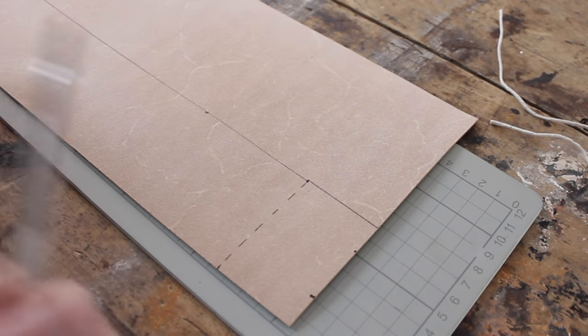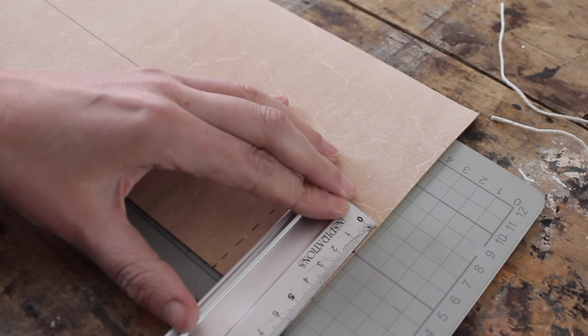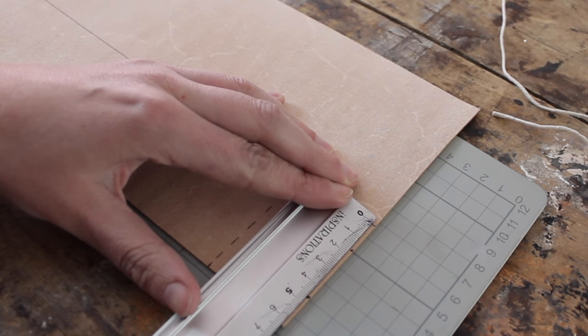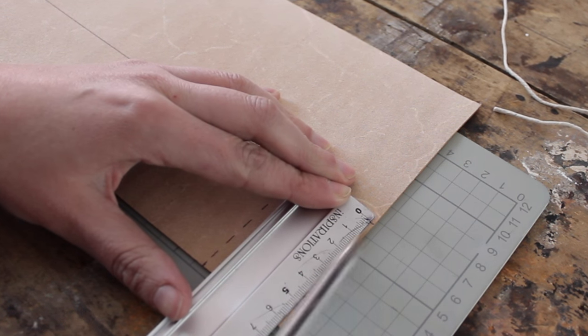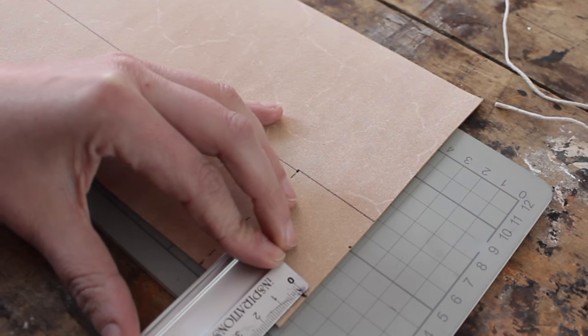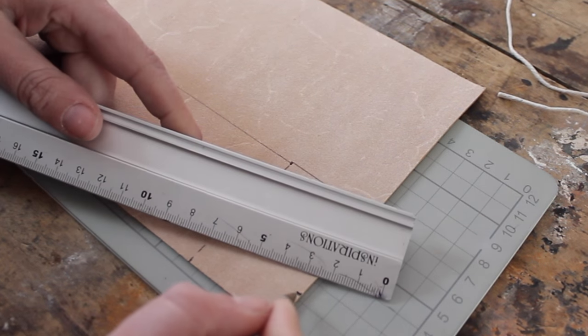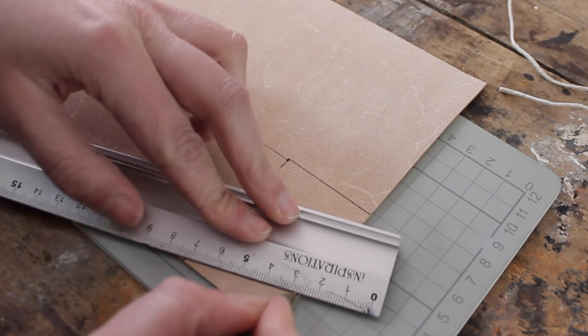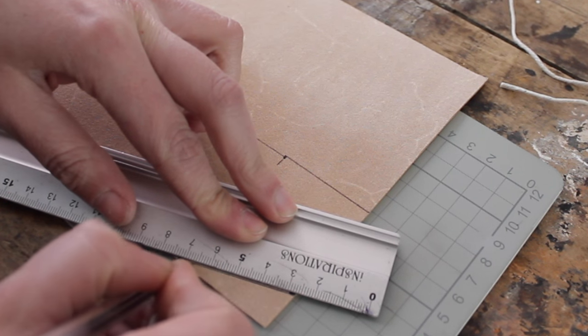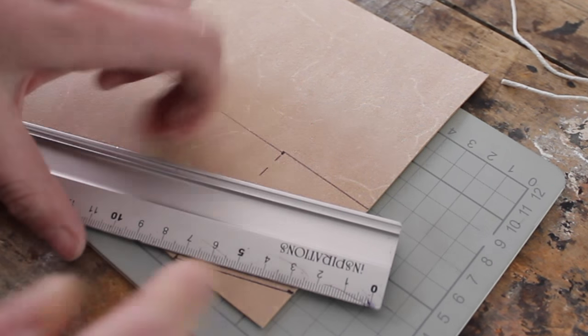We're gonna taper the overlap. So what we're gonna do is put a mark at one and a half centimeters from the top and one and a half centimeters from the bottom. Now on my 26 centimeter mark, I'm gonna draw a line so my overlap has a nice tapered effect.